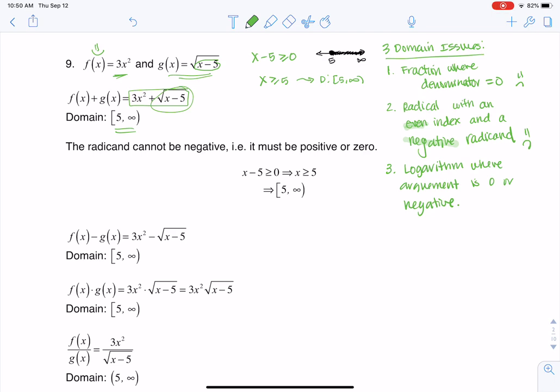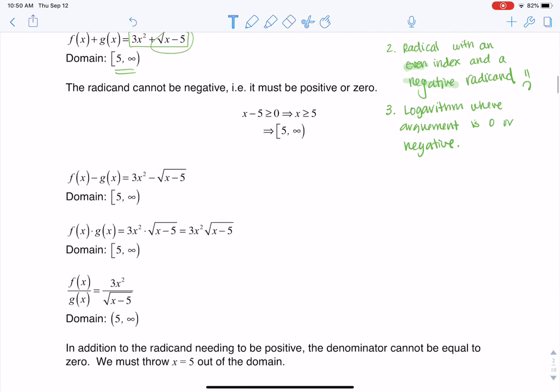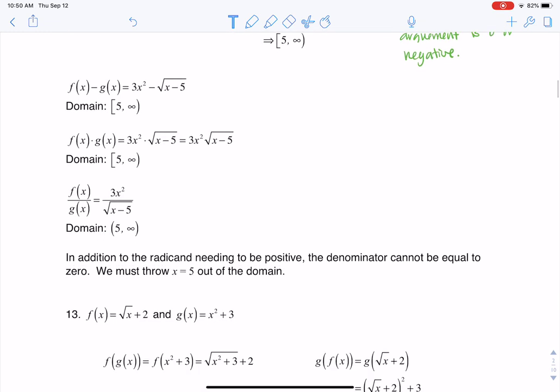If I scooch down a bit and I take a look at the difference function, again, I can see here I have no fractions. I do have a radical. I'm going to make sure I check that, and then I have no logarithms. So I just need to make sure I do have an even index. I would need to make sure my radicand was greater than or equal to 0, and that's the same domain that we've been working with.